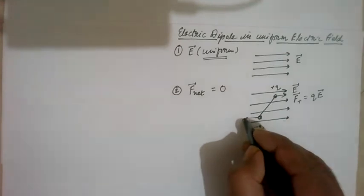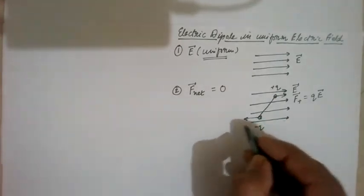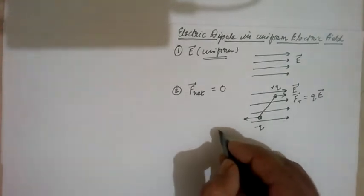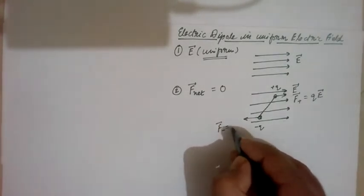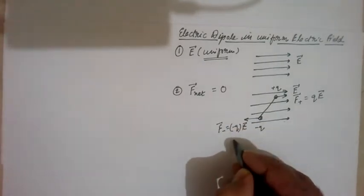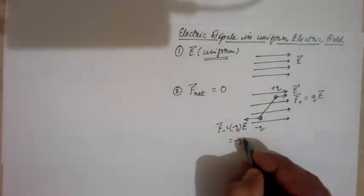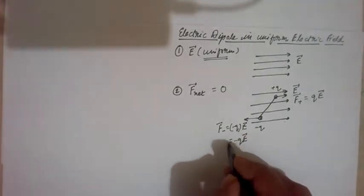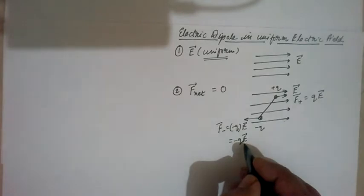Force on negative charge is opposite to electric field vector. And this is written as charge into electric field. And here it is minus Q into E. This negative sign means force is opposite to electric field vector.